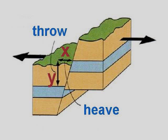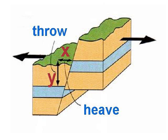The movement of the fault can be measured in the x direction, right or left — this is called the heave. When the movement is measured in the y direction, up and down, we call that movement the throw. To measure the left or right movement, we measure the heave. To measure the up or down movement, we measure the throw.